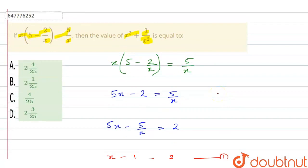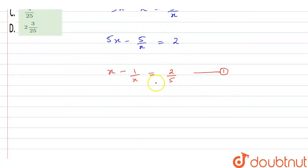Now guys, we need to find x square plus 1 upon x square, right? So, squaring on both sides.